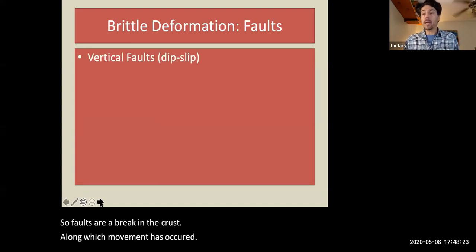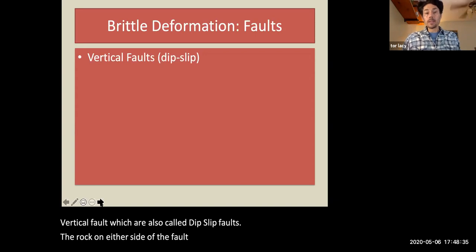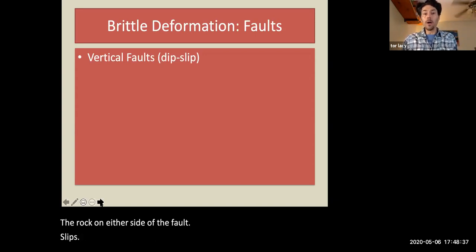We recognize two categories of faults. Vertical faults, which are also called dip-slip faults. The rock on either side of the fault slips along the direction of dip.